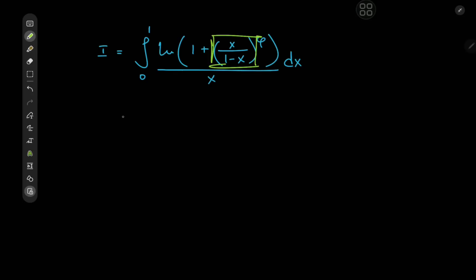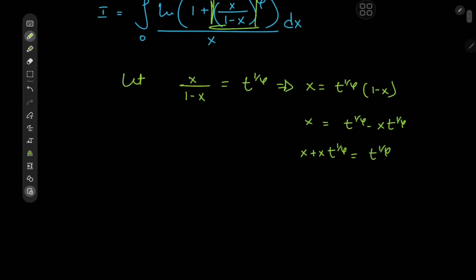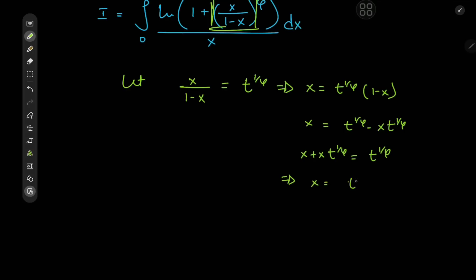So we're going to let x/(1 - x) equal t^(1/φ). Now I want x in terms of t for the differential element, so we have x = t^(1/φ) × (1 - x), which means t^(1/φ) - x·t^(1/φ). Collecting all x terms on one side gives x + x·t^(1/φ) = t^(1/φ), which implies x = t^(1/φ) / (1 + t^(1/φ)).